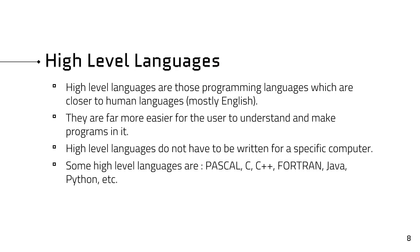High-level languages are those programming languages which are closer to human languages, mostly English. They are far easier for the user to understand and create programs in, compared to machine language and assembly language.